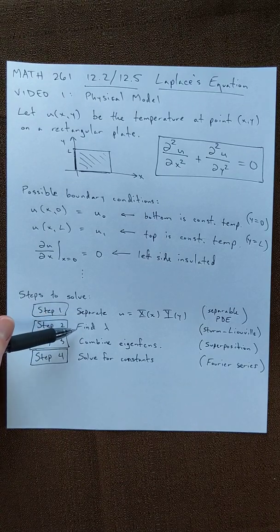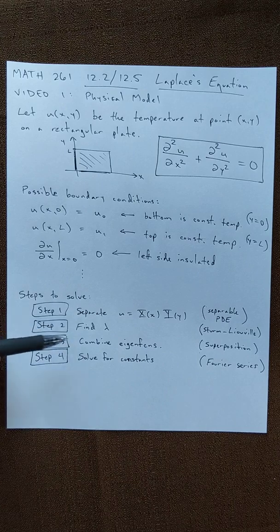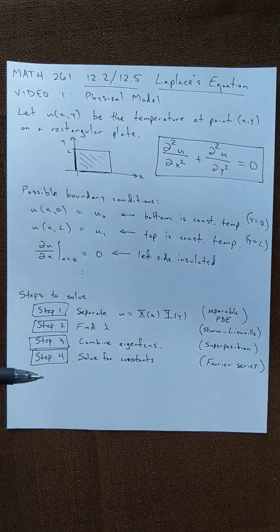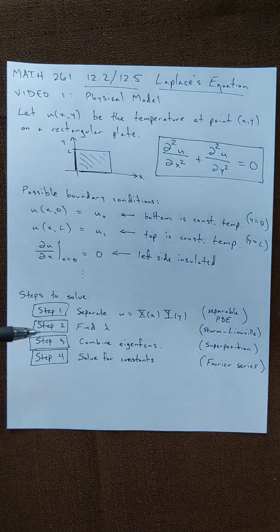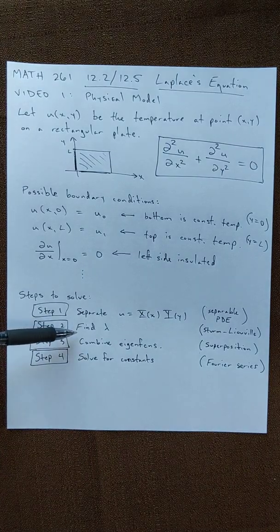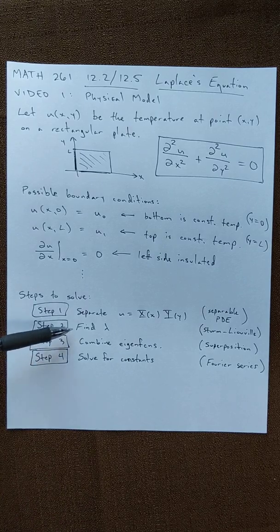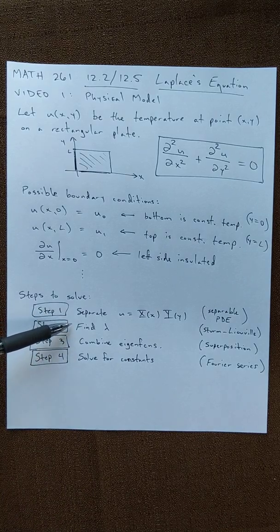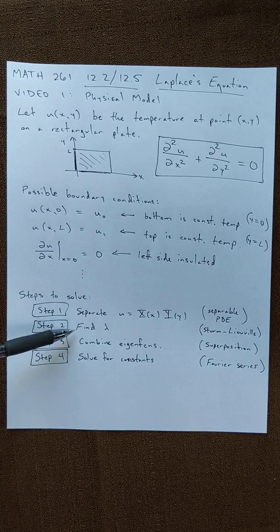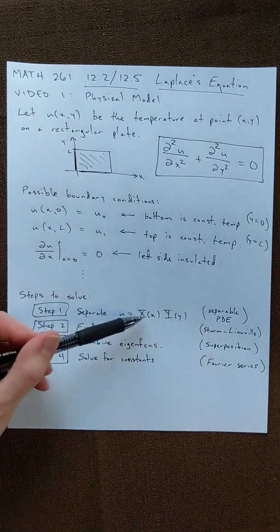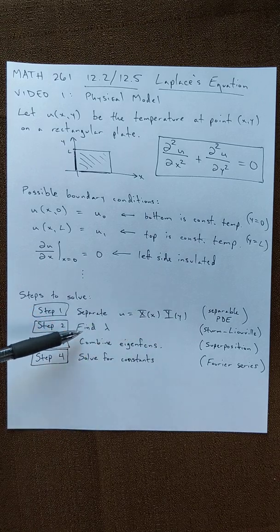So separate the constants. Once we do that, we're going to have to do a Sturm-Liouville problem on whichever one we have the best eigenvalues for. In the previous problems it was always x, but depending on your boundary conditions it might end up being easier to solve the y's first, but it's not a hard and fast rule. Once we do that, once we find lambda, we plug lambda into the other equation. So we'll have a d and x and y. We solve one, plug our lambda into the other one.